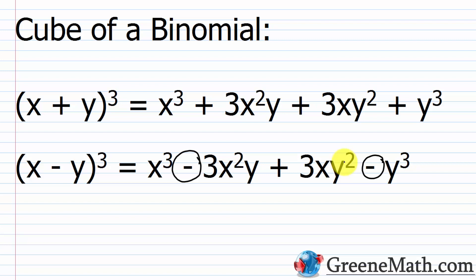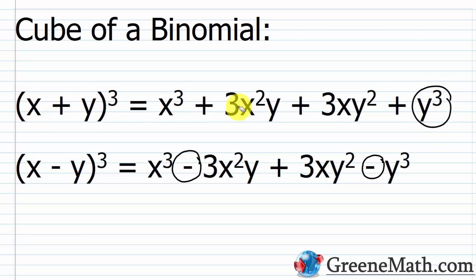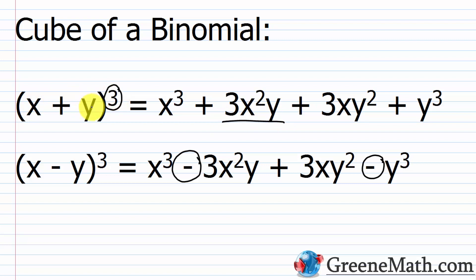For x minus y cubed, it's the same formula but with a minus sign in front of the second and fourth terms. This one is a bit harder to remember. My technique: I know x will be cubed and y will be cubed for the first and last terms. For the middle terms, the exponent 3 multiplies each combination — first as x² times y, then as x times y².